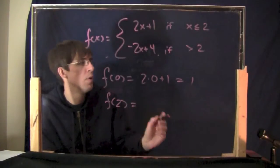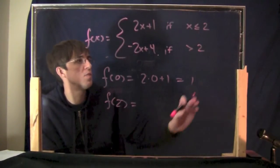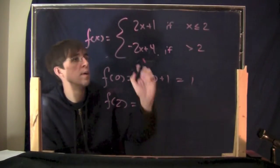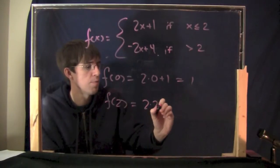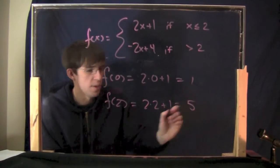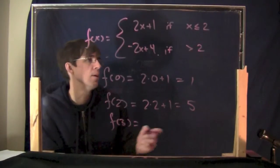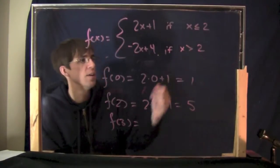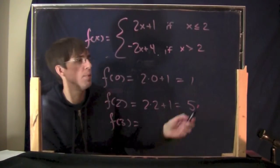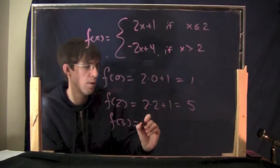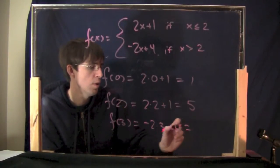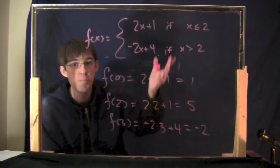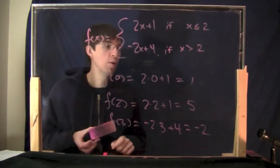What about f of 2? Which piece should I use? When x is 2, it satisfies the first piece, so I'm going to plug into the top formula again. I get 5. What about f of 3? When x is 3, which is greater than 2, you put it into the second piece. You get minus 2 times 3 plus 4. Negative 6 plus 4 is negative 2. This is how you plug into a piecewise function.